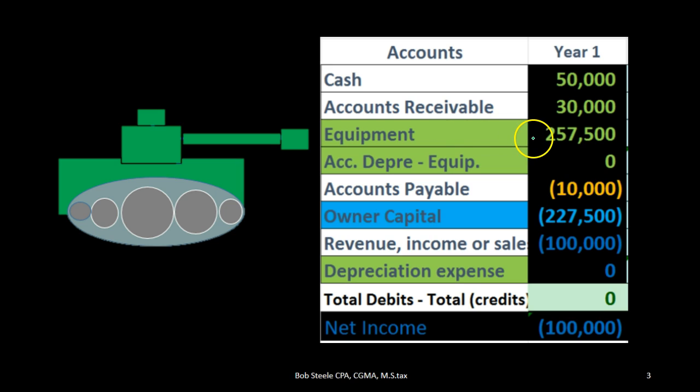Once we have the tank on the books as equipment, we're going to depreciate it over the useful life in an attempt to match that cost to the time period in which it has been used to help generate revenue. We do that not by decreasing the equipment account directly, but by creating another account called accumulated depreciation.